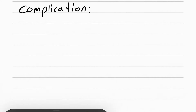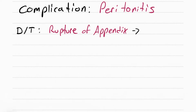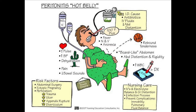One of the complications of appendicitis is peritonitis. This happens when the appendix ruptures. Peritonitis is inflammation of the peritoneal cavity, the sac that holds your guts. This is a medical emergency and it needs to be taken care of right away.